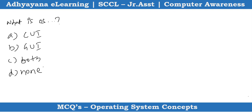What is the format of an operating system — CUI or GUI format? The correct answer is C, which is both.